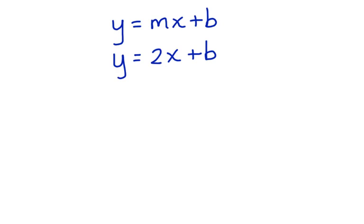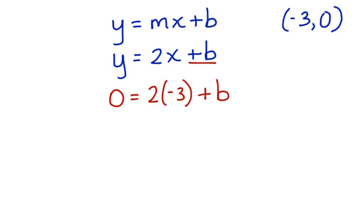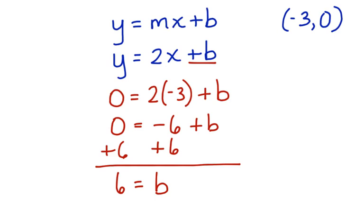To do this, we can choose either of the ordered pairs. Now we can substitute the coordinates of this ordered pair back into the equation for x and y and then we'll be able to solve for the y-intercept. Now you can see that we've substituted negative 3 in for x and 0 in for y. Now let's solve this equation for b. Our y-intercept is a positive 6.